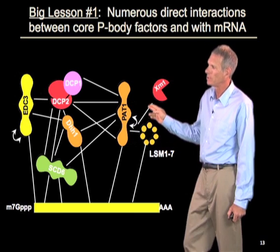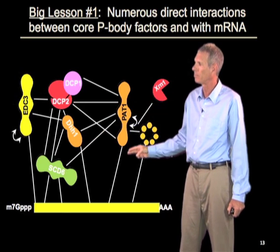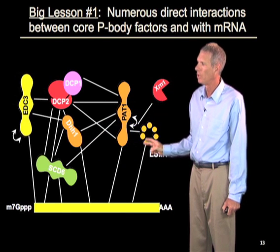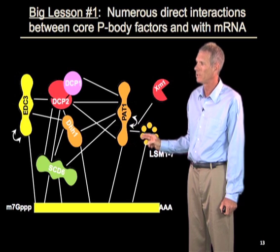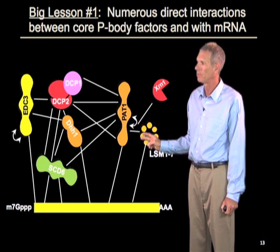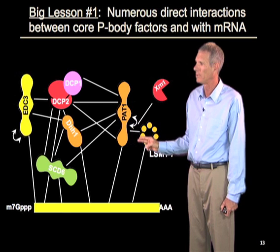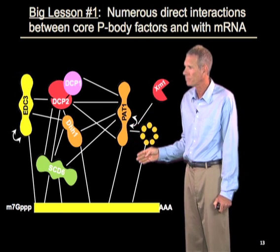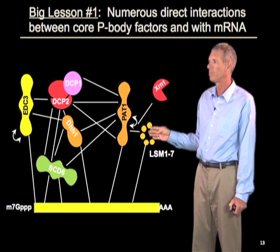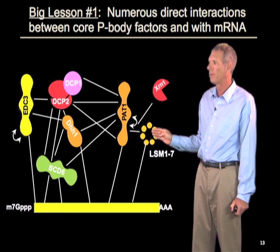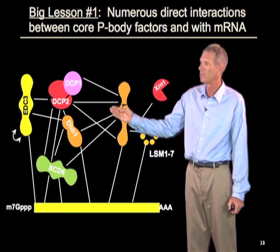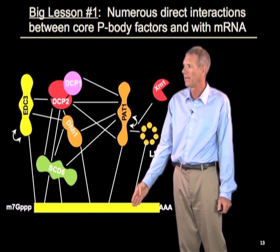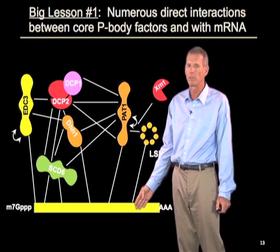This is a cartoon showing all of these components with direct protein-protein interactions between the different core components of p-bodies using purified proteins. You can see there is a dense network of interactions. Within that network, many of these proteins are also RNA-binding proteins, so they can not only assemble with each other but also bind to the RNA molecule to make an RNA-protein complex.